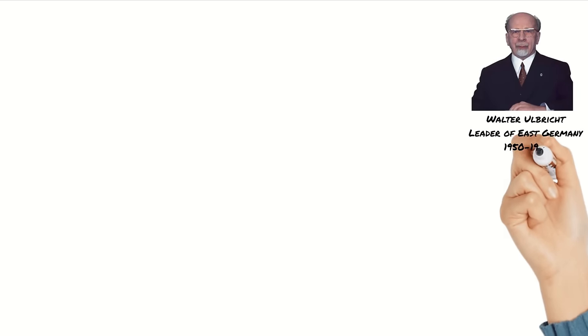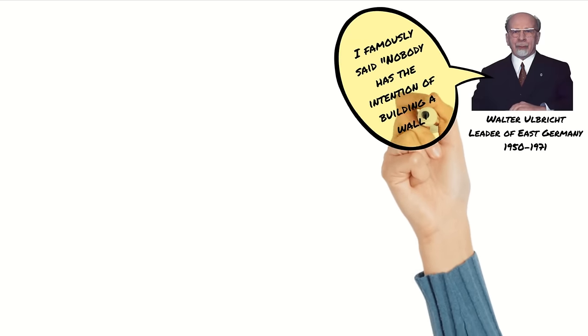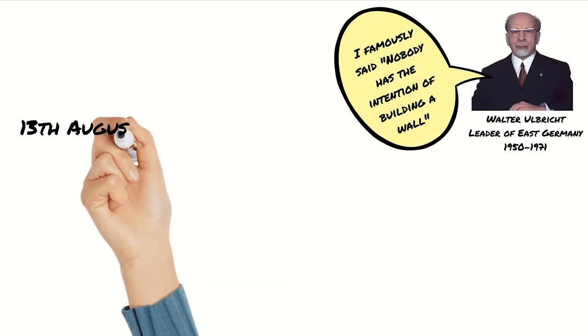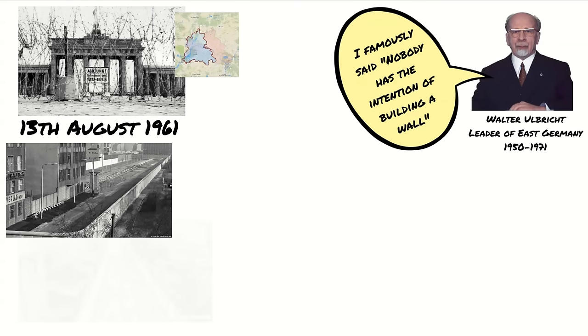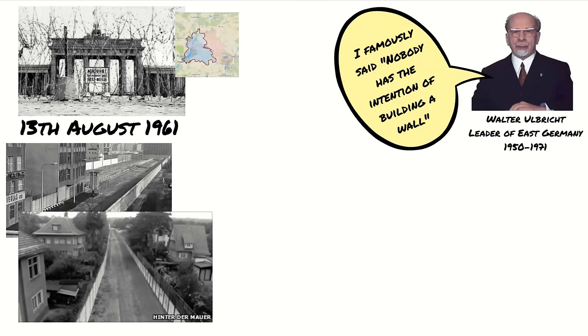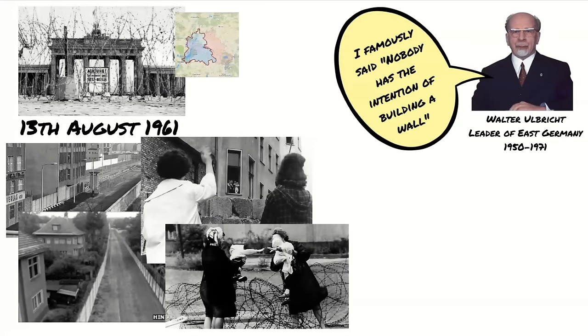After consulting with Khrushchev, the leader of East Germany, Walter Ulbricht, met with other members of his cabinet on the 12th of August 1961. There, he signed the order to begin building the wall. The citizens of Berlin woke on the 13th of August to find a barbed wire fence enclosing West Berlin. The divide cut through streets and even buildings in some places, separating families, friends, and owners from their businesses.